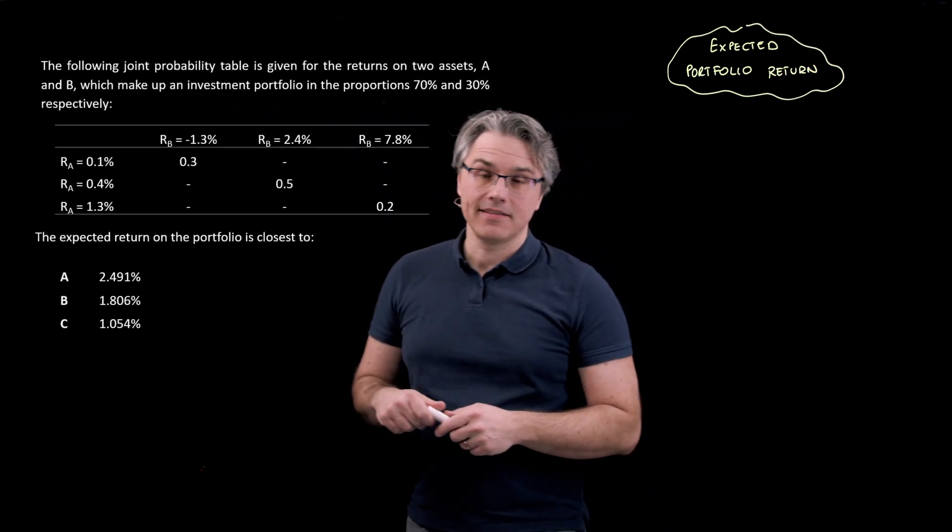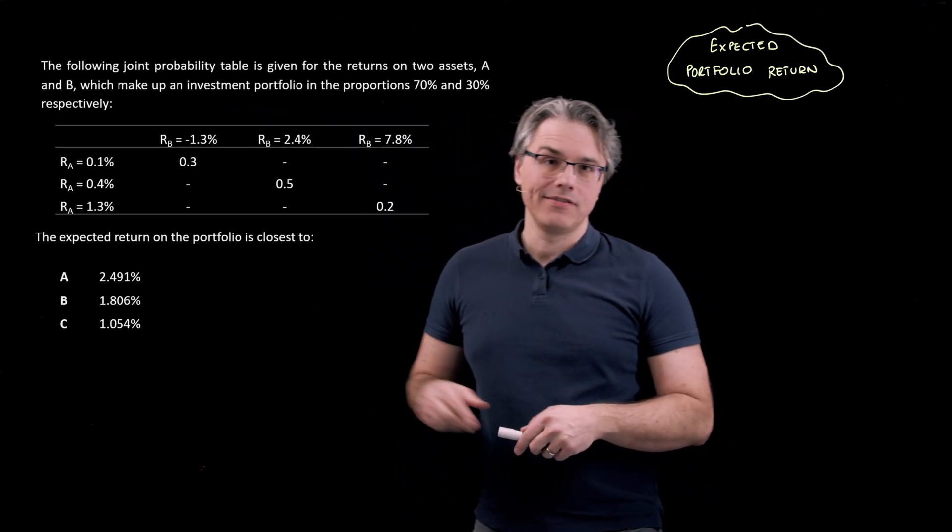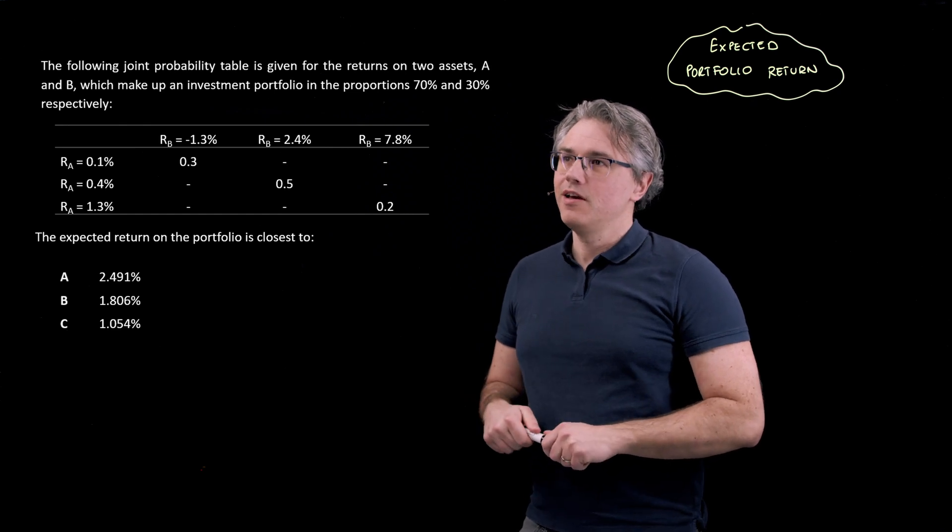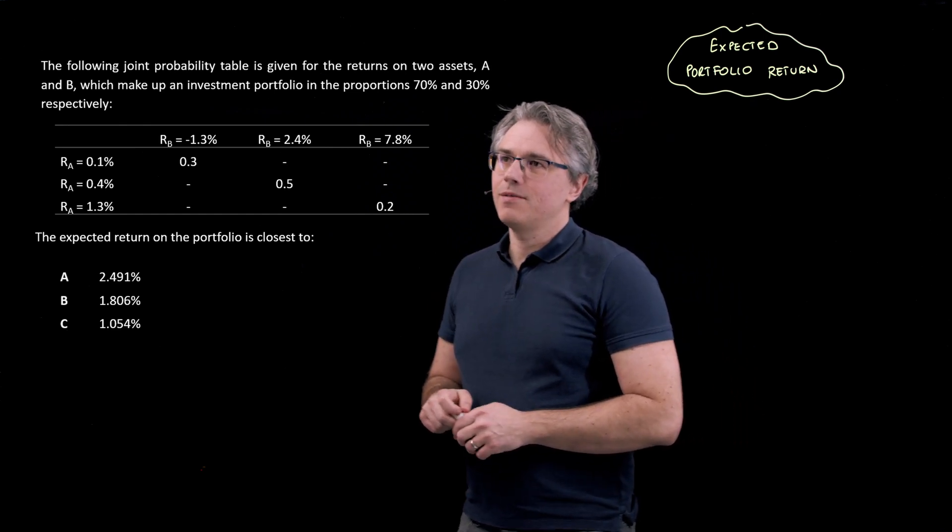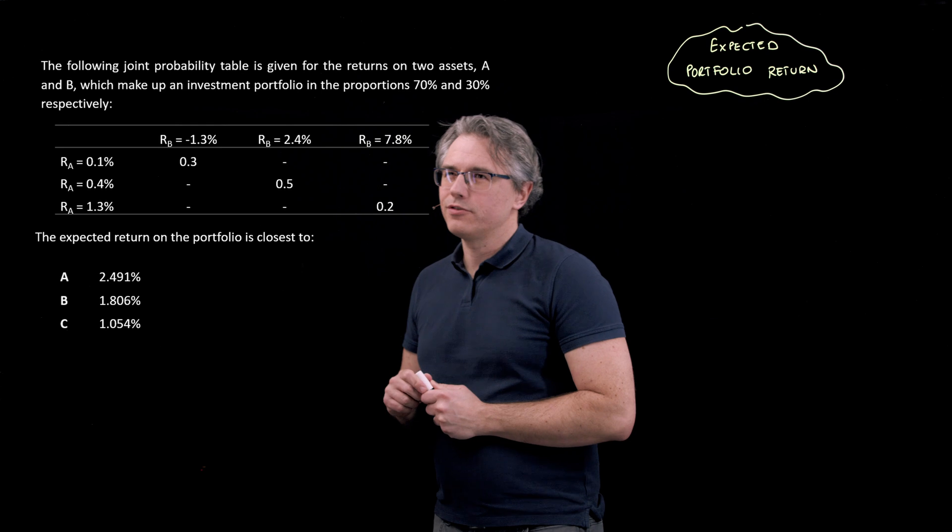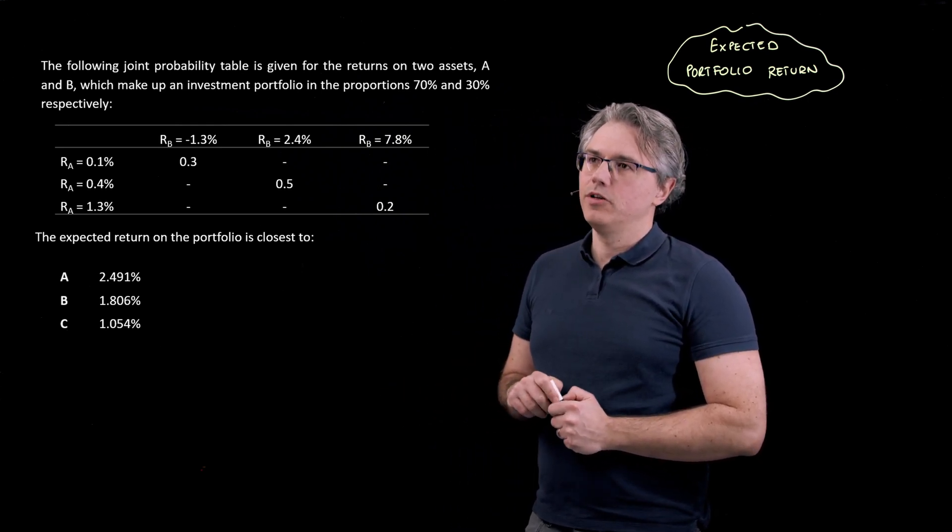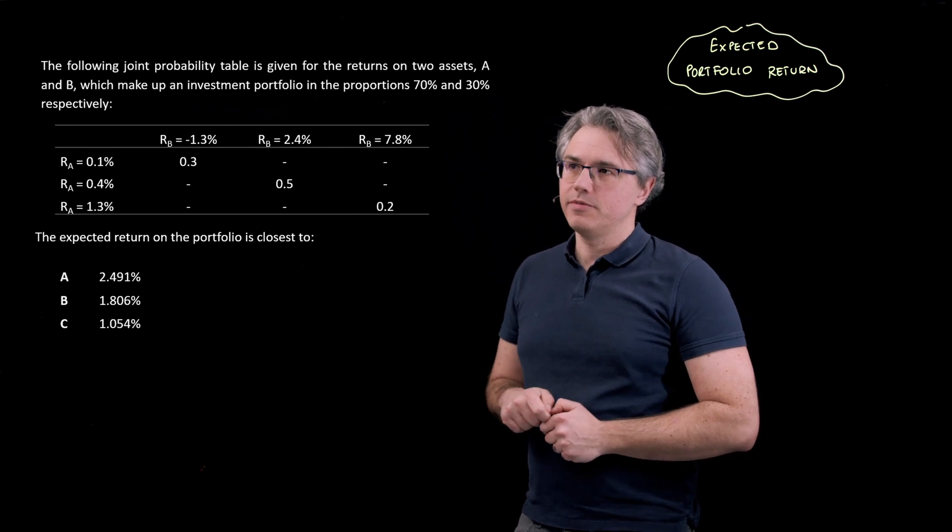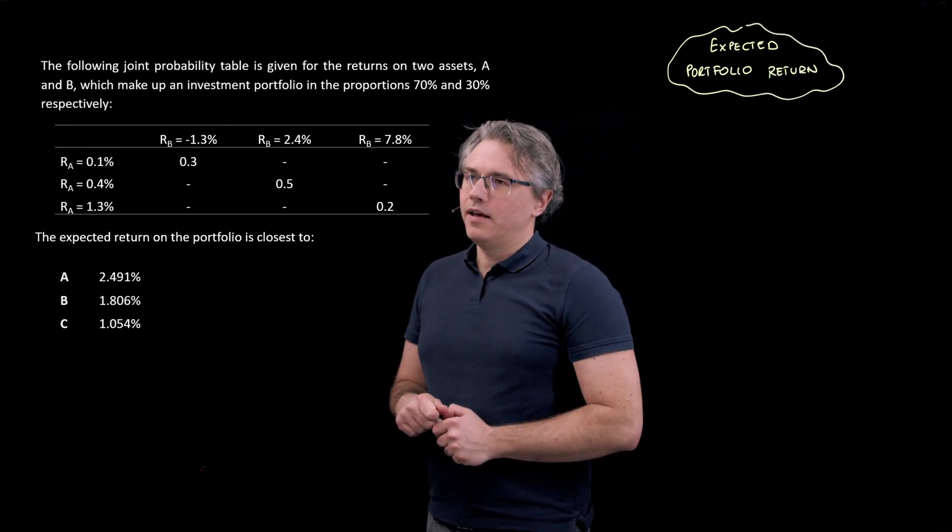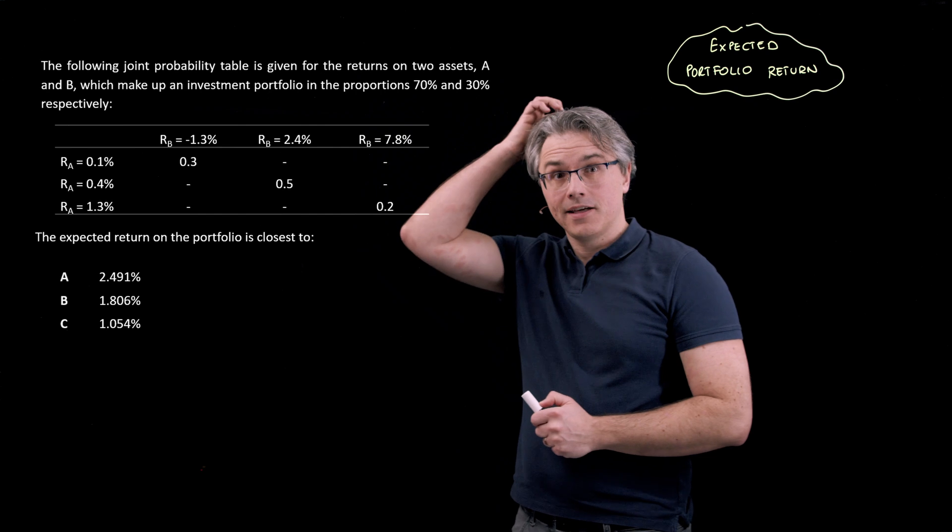This is the data that we're going to use in this question as well as a couple of follow-on questions. The following joint probability table is given for the returns on two assets, A and B, which make up an investment portfolio in the proportions 70% and 30% respectively. What you've got is a table where in the columns, you've got the possible returns that are going to be achieved by asset B.